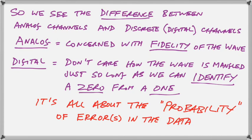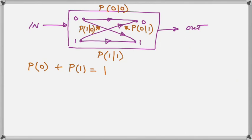Now we stop a minute to just note the difference between analog channels and discrete or digital channels. In analog channels we are concerned with the fidelity of the waveform and the waveform is what is corrupted by the noise. However in a digital channel we really don't care whether the wave is mangled or not just so long as we can identify a 0 from a 1. So clearly this is a more robust communication mechanism because all we care about is that crossover probability. It's all about the probability of errors in the data.